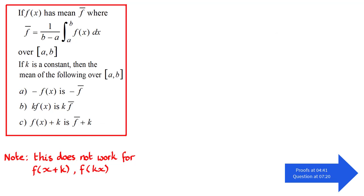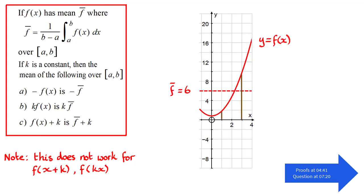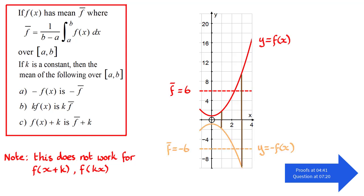So first of all, let's show the graphical approach. Let's suppose we have y equals f of x and it's defined over the interval for x going from 1 to 3, and the mean f bar is equal to 6. Now if we take the first transformation, minus f of x, remember that is a reflection of f of x in the x-axis. What happens is that the mean, which was 6, becomes negative 6.